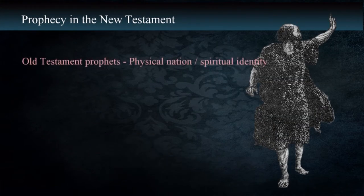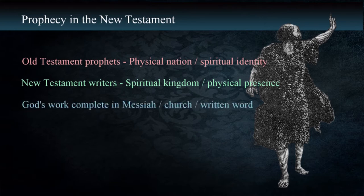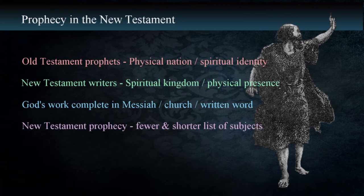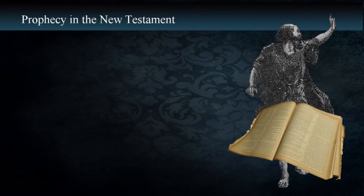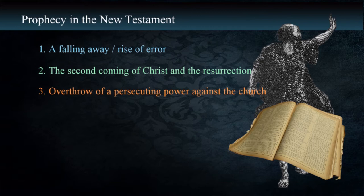The Old Testament prophets wrote to the Lord's people who existed as a physical nation with a spiritual identity. The writers of the New Testament address God's people who exist as a spiritual kingdom with a physical presence in the world. The work that God had planned for the salvation of man was complete in the coming of the Messiah and establishment of the church. For that reason, prophetic writings are fewer and deal with a shorter list of subjects: a falling away or rise of error, the second coming of Christ and the resurrection, and the overthrow of a persecuting power against the church.